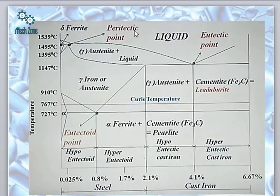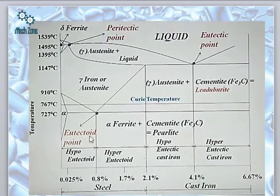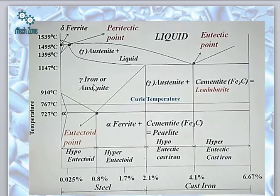We have three important points on the diagram: the peritectic point, the eutectic point, and the eutectoid point. These three points — peritectic, eutectic, and eutectoid — are key reference points on the iron-carbon diagram corresponding to specific reactions and compositions.